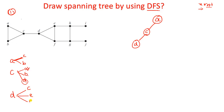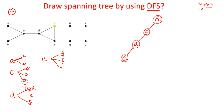The next vertex to explore is D. D has edges with C, E, and F. C is already visited so no need to take it again. The remaining elements are E and F. I take E as my next vertex. Now explore vertex E. E has connections with D, F, and H - three connections are there. D is already visited, so among F and H I can take F.